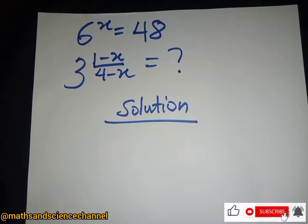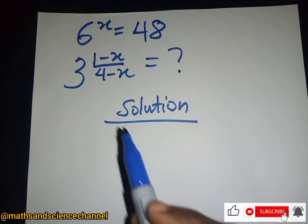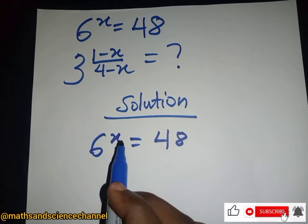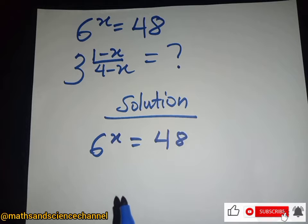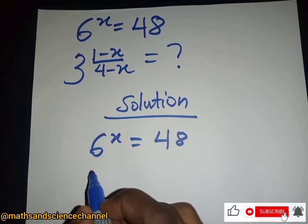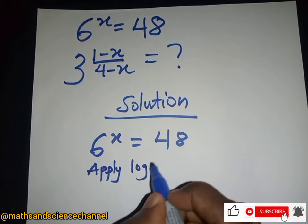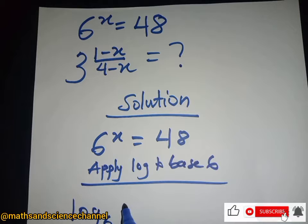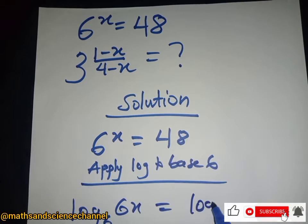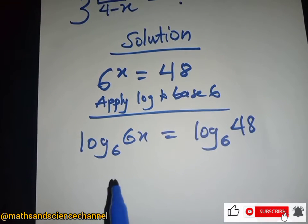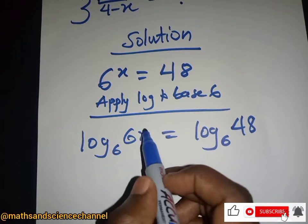So what we are going to do is use this formula to determine this. We have 6 to the power x being equal to 48. To find x, we are going to apply log on both sides — specifically log base 6. So we apply log base 6, and x goes to the front from properties of log.